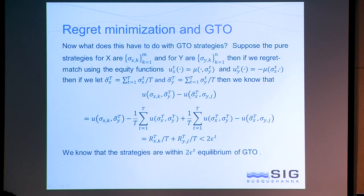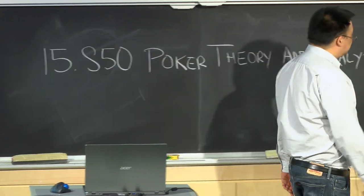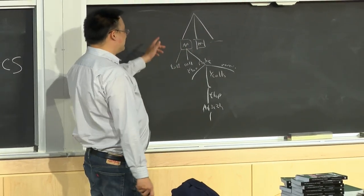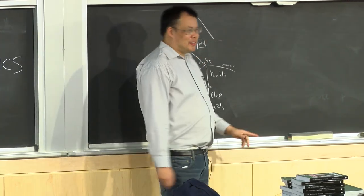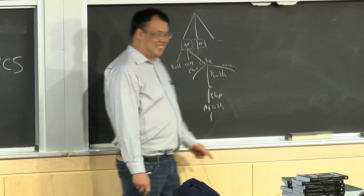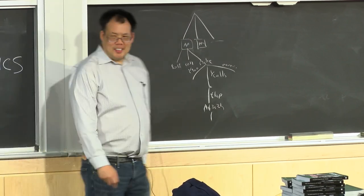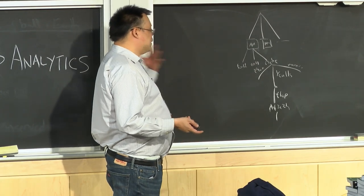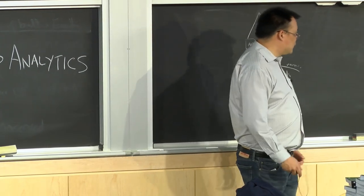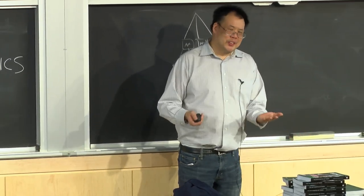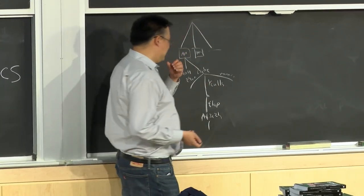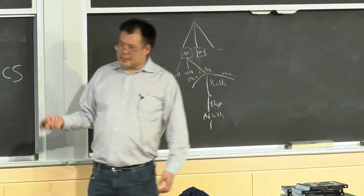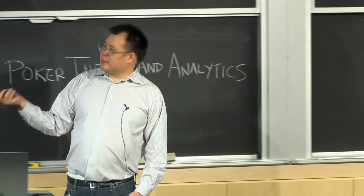What this means is: suppose you choose your strategy — just some mixture. Your opponent tries to figure out the best way to exploit it. This is often called the nemesis strategy. Your opponent figures out his nemesis strategy against you, and unless you're playing the exact game theory optimal strategy, his nemesis is always going to be better than the game value — he just looks at what you do and finds the best response. You do the same to him. The difference of those two values is the exploitability.